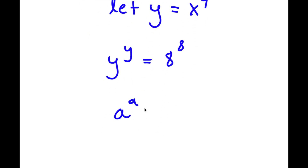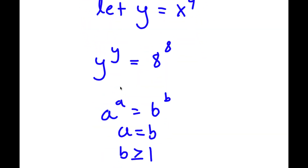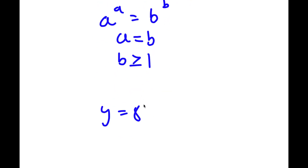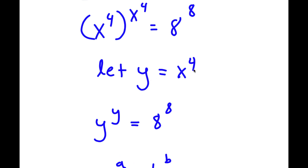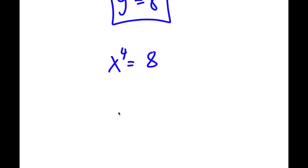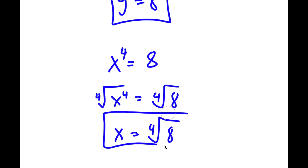If I have something in the form a to the power of a equal to b to the power of b, this means a is equal to b, as long as b is greater than or equal to 1. So in this case, y to the power of y equals 8 to the power of 8, meaning y equals 8. Since y equals x to the power of 4, I have x to the power of 4 is equal to 8. Taking the fourth root on both sides, the fourth root of x to the power of 4 is x, so x is equal to the fourth root of 8. This is my answer.